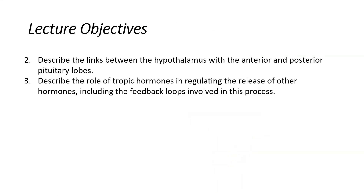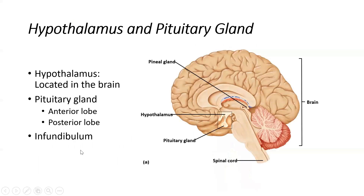That was an introduction to the glands and whether they're primary or secondary. Now we're going to get into the links between the hypothalamus and the anterior and posterior pituitary lobes — really getting into the control center of the endocrine system via the hypothalamo-pituitary axis.